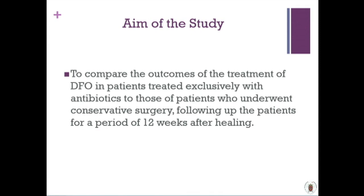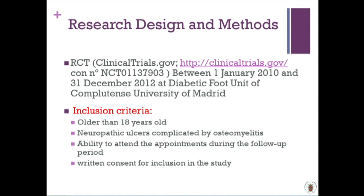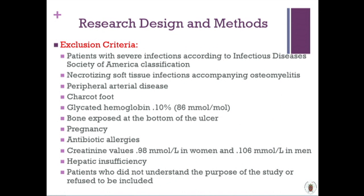The objective of our study was to compare outcomes of treatment in diabetic foot patients with osteomyelitis treated exclusively with antibiotics versus those who underwent conservative surgery. This was a randomized controlled trial. Inclusion criteria were patients older than 18 years with a neuropathic ulcer complicated by osteomyelitis, ability to attend follow-up appointments, and written consent. Exclusion criteria included severe infection, necrotizing tissue infection, concomitant osteomyelitis, peripheral arterial disease, poor metabolic control, bone exposure at the ulcer base, pregnancy, antibiotic allergies, renal failure, hepatic insufficiency, and refusal to participate.